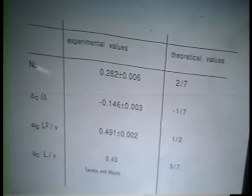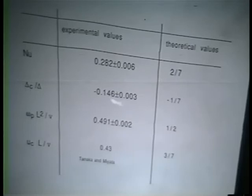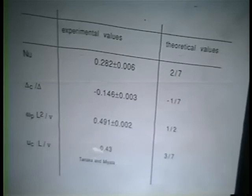The reason the number is embarrassing is that two-sevenths, which is the theoretical value, is 0.2857..., and that's just too good a fit. The Nusselt number has been measured by other people long before our group got to it, and this is a typical value measured by others. Delta C over delta: the theory gives minus one-seventh power; the experimental value is again too good to be true. UC has been measured by a Japanese group, Tanaka and Miyata, and uc times L over nu went as Rayleigh number to the 0.43 power, and we got three-sevenths, which is again exactly 0.43.